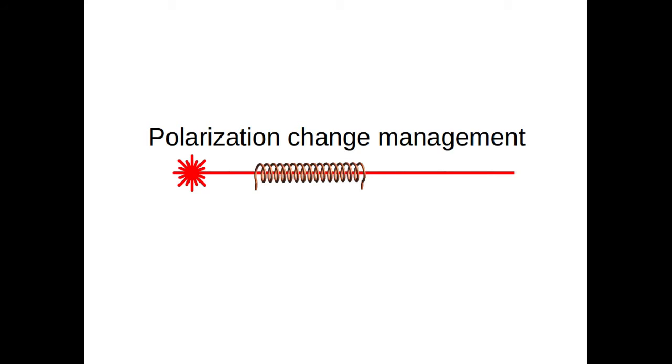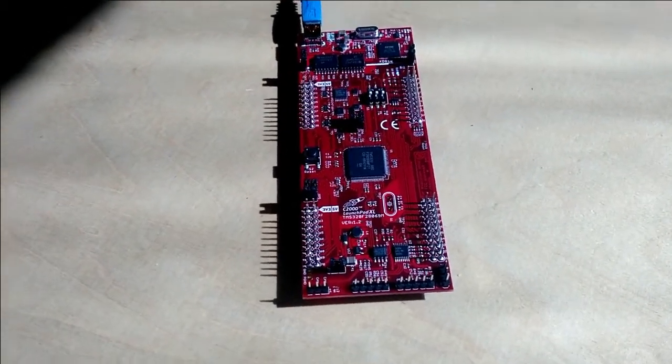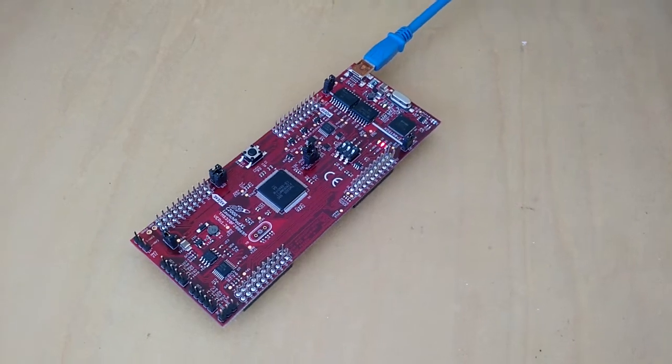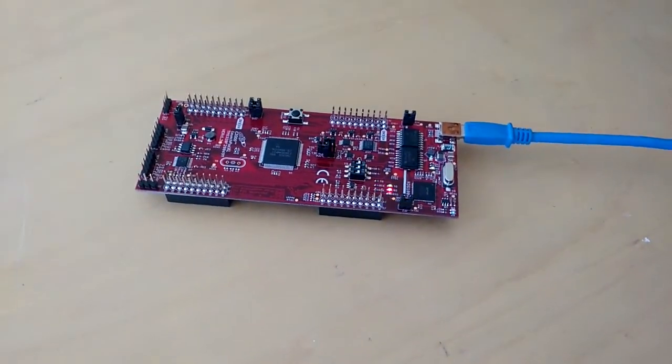For managing the polarization change, we firstly programmed the C2000 Piccolo Launchpad, which has the same MCU onboard as the TAPAS, to run an example program that toggles two LEDs on the launchpad.